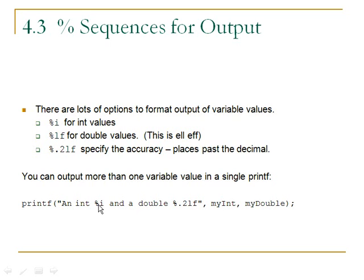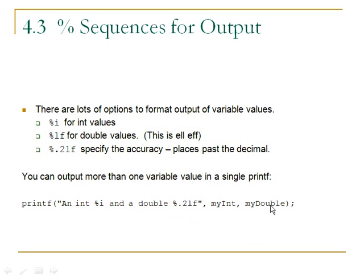The format specifiers come in order. The first number corresponds to the %i and that had better be an int variable or int value. The second corresponds to the second format specifier. You can have as many of these as you want, and they correspond to each other in the order that they appear.